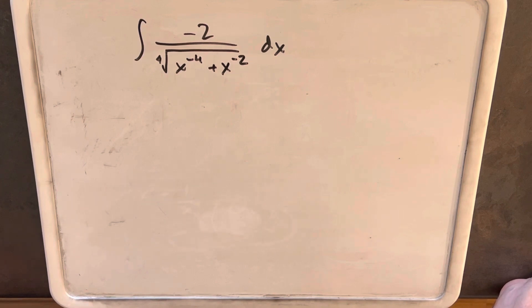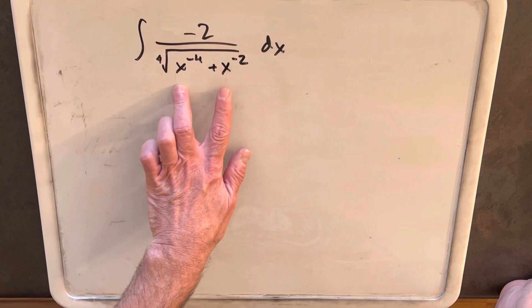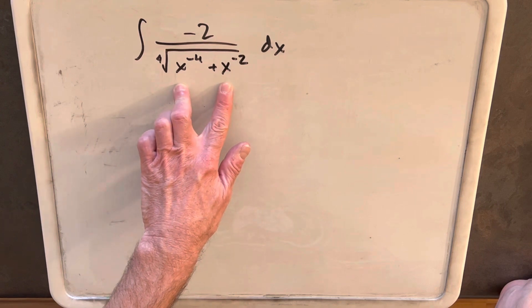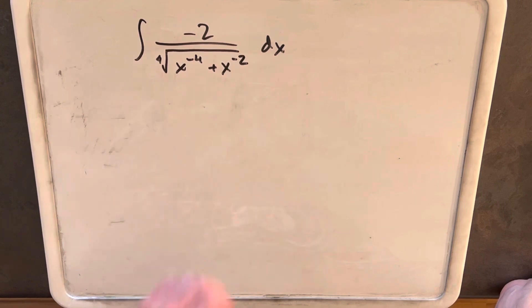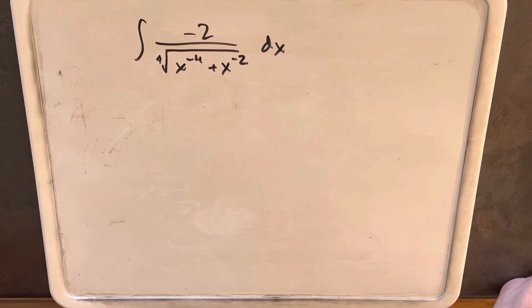I thought this was interesting because we don't often have a fourth power, that's a little different, and then we also have two variables with exponents in the radical, which makes it so there's not an easy way to use trig substitution. I don't see an obvious u substitution.